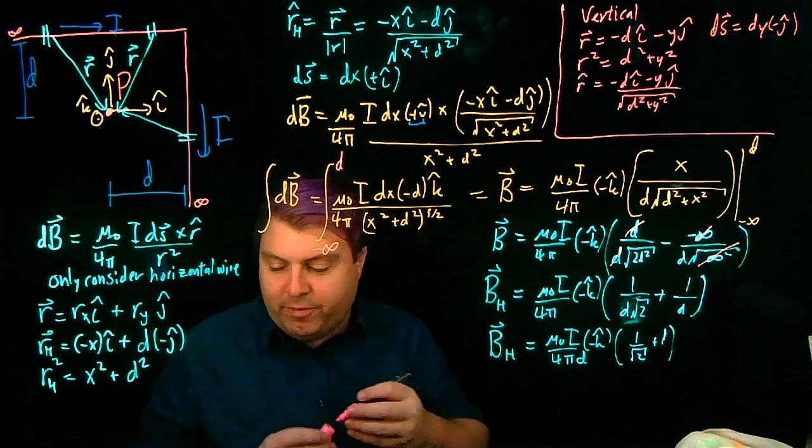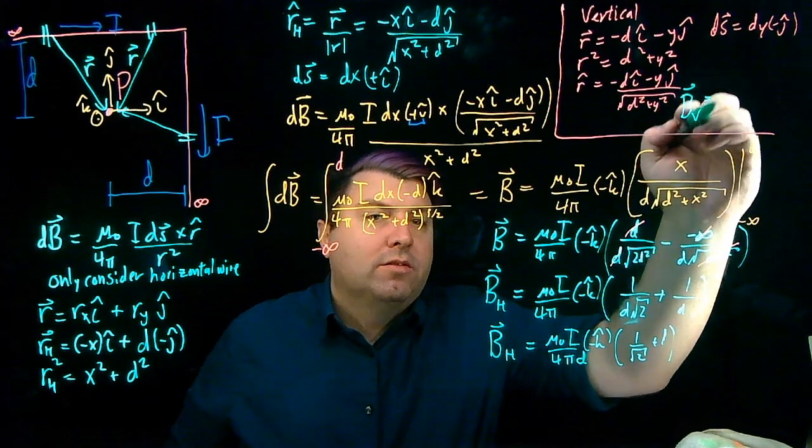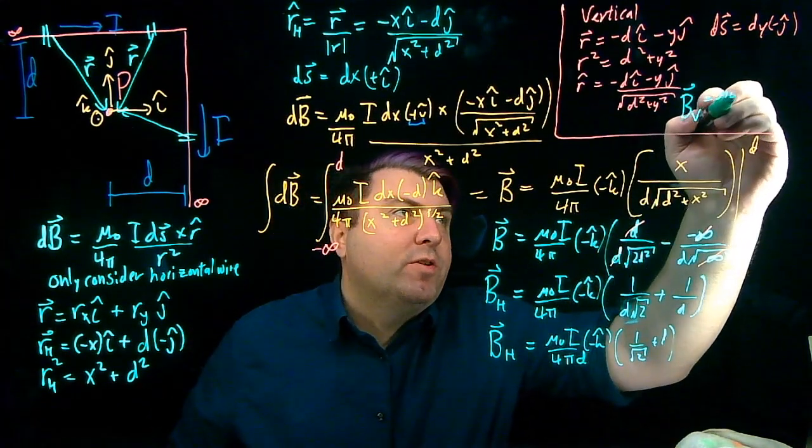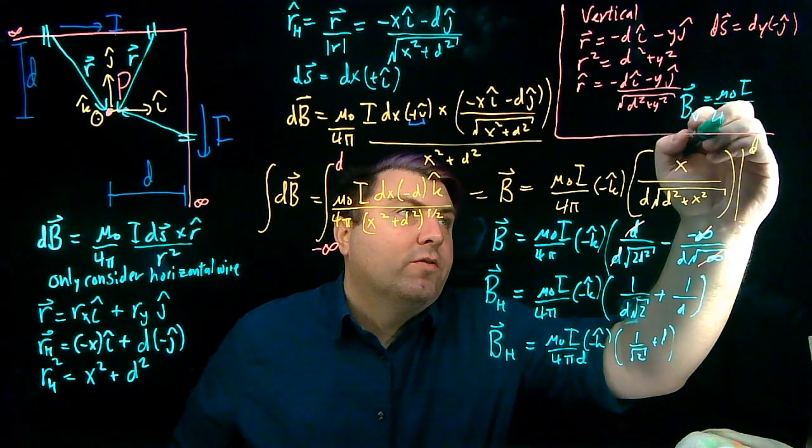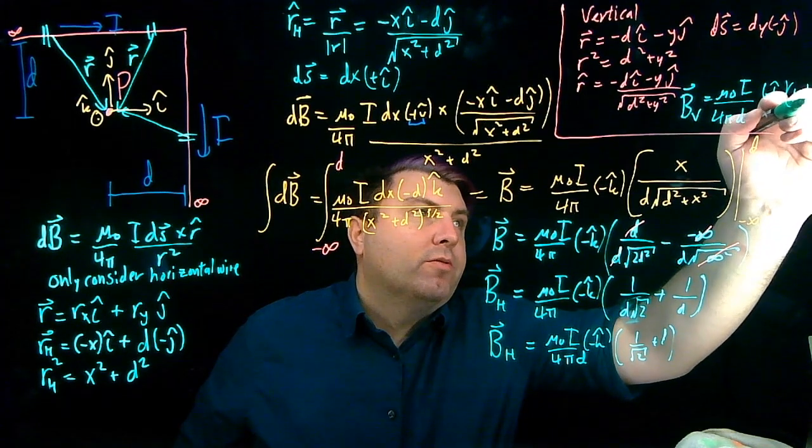So after we did all that, what we hopefully should have gotten for B in the vertical was pretty much the same as this. In fact, exactly the same as this. Mu naught i over 4 pi d negative k hat 1 plus 1 over root 2.